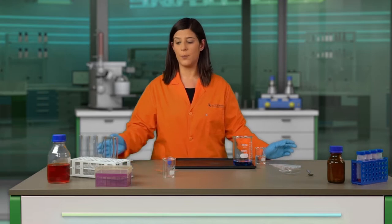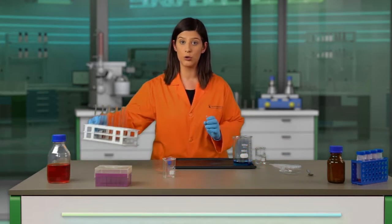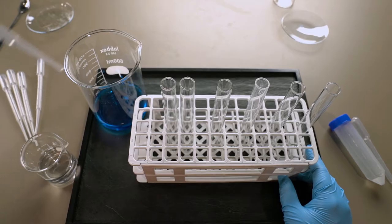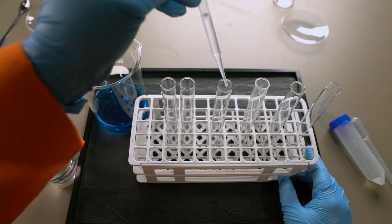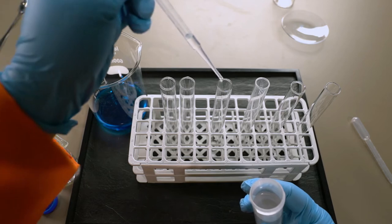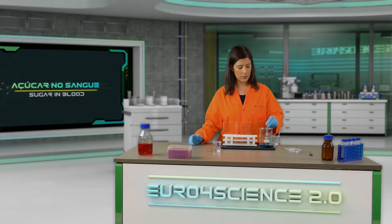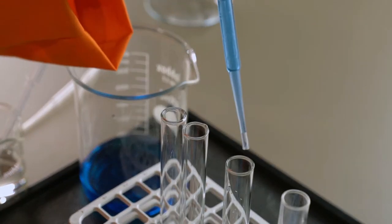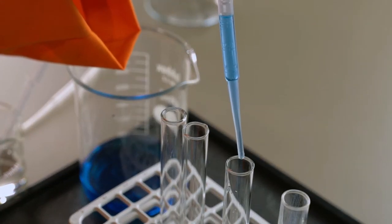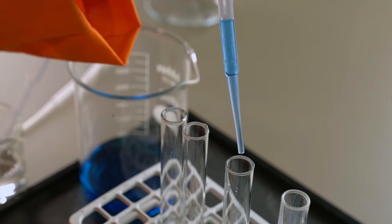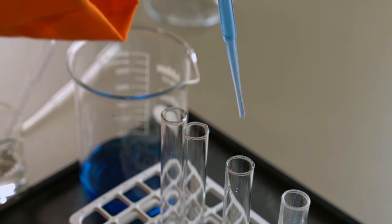Agora, temos de preparar a amostra para depois compararmos com a escala de cor construída. Com uma pipeta de pasteur, adicionamos 30 gotas de água a um tubo de ensaio e também 10 gotas da amostra recolhida. De seguida, adicionamos 10 gotas do reagente de Benedict que preparámos anteriormente. E, por fim, deixamos o tubo de ensaio em banho-maria até que ocorra a mudança de cor.